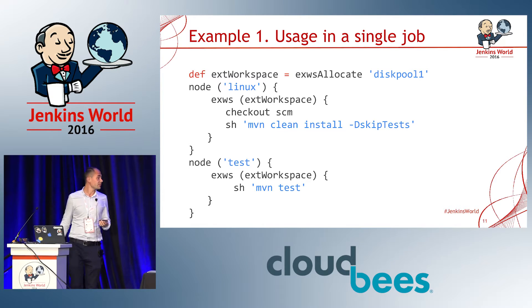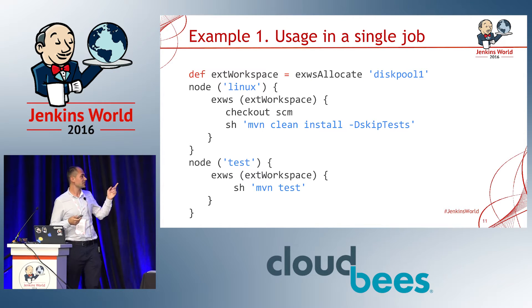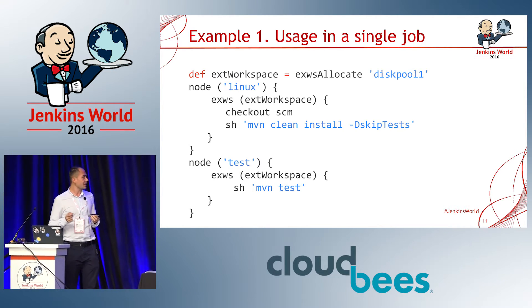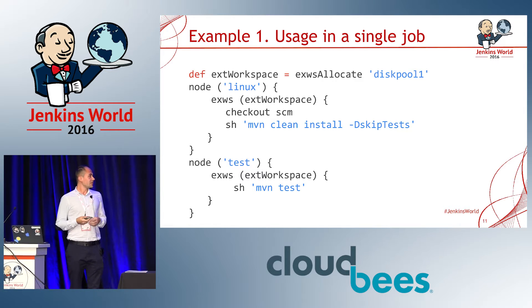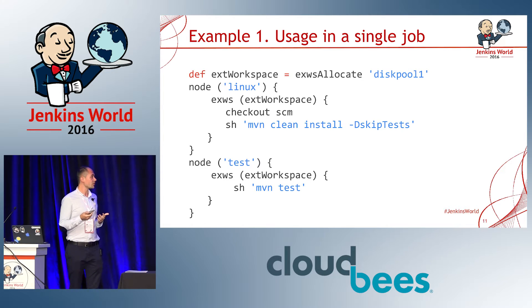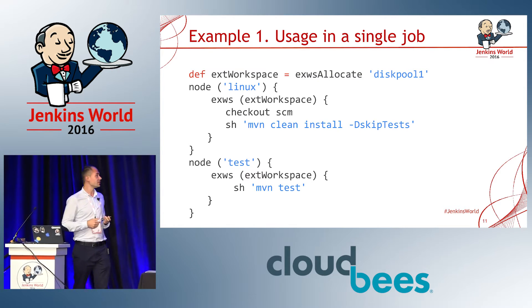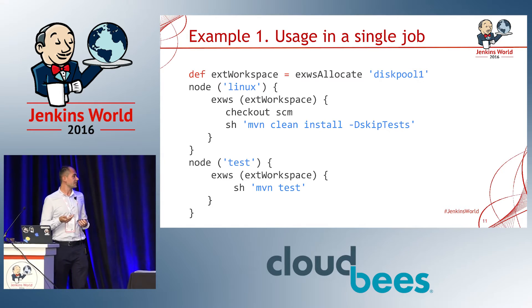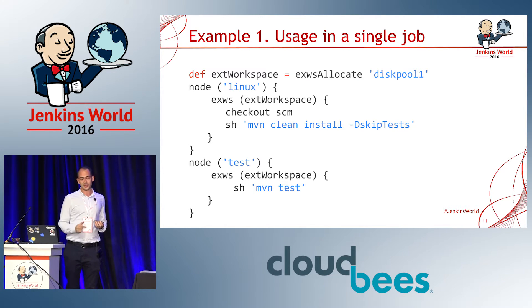Now let's have a look at the pipeline example. In this example, I'm reusing the same workspace in the same pipeline on two different nodes. Firstly, I'm cloning the project and building it but skipping the tests. Then secondly, I'm running the tests in the same workspace as before. I'm calling the xws_allocate step by providing a disk pool ID parameter — this step allocates a disk from the disk pool and on that disk allocates a workspace. Then with the object returned, I pass it as an input parameter to the xws step within the node labeled Linux, which computes the complete workspace path from the node to the actual disk. I clone the project, build it, and then on another node labeled test, I run the tests.